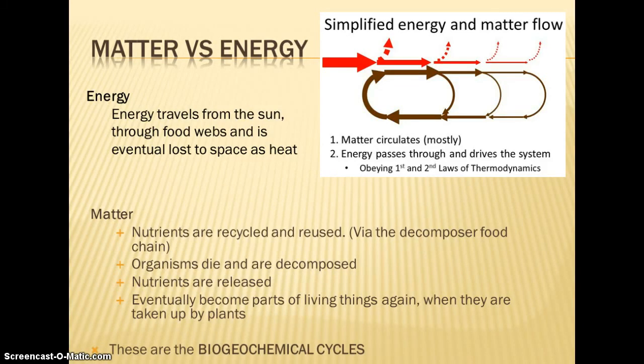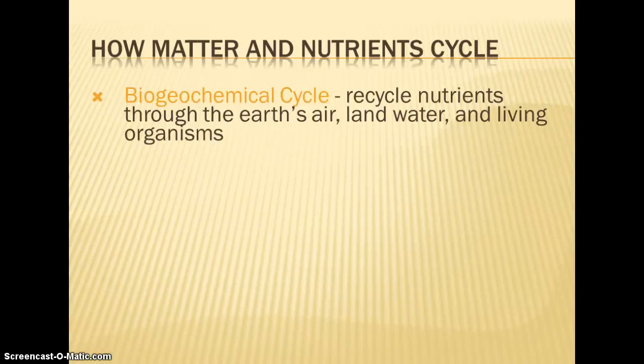We call these biogeochemical cycles. We're going to go into more detail about the different types of cycles. We'll look at carbon, oxygen, sulfur, phosphorus, and nitrogen. What a biogeochemical cycle is, if you break down the word: bio means life, geo is Earth, and chemical. So these are how different matter and nutrients cycle through living things and the Earth. It goes through the atmosphere, the lithosphere, and the hydrosphere.